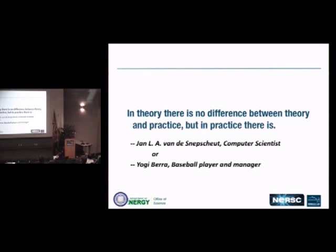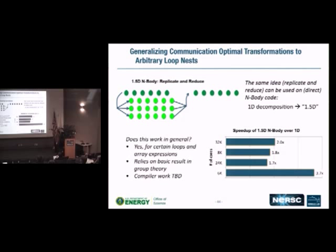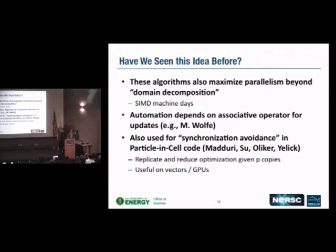In theory there is no difference between theory and practice — but in practice there is. So is this just a theoretical result? No — you can actually get real speedup numbers from this as well, just as with matrix multiply. It's important to think about how you might parallelize your codes in ways that reduce traffic by looking at higher-level kernels, and by thinking about other approaches than just decomposing data structures into independent pieces. The way to think about what's happening in both the matrix multiply and N-body cases is 'replicate and then reduce': make replicas, independently work on partial results, then reduce to get the full answer.